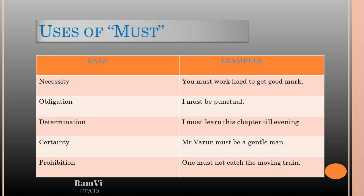Next, determination: 'I must learn this chapter by evening' — it shows determination, so we use 'must'. Next, certainty: 'Mr. Warren must be a gentleman' — it's a certainty, so we use 'must'. The last use is prohibition: 'One must not catch a moving train' — this is a prohibition, and here also we can use 'must'.